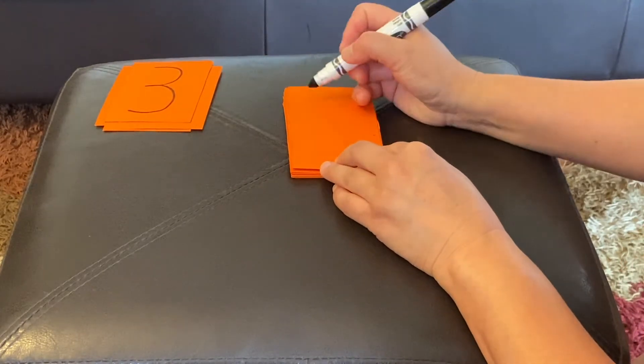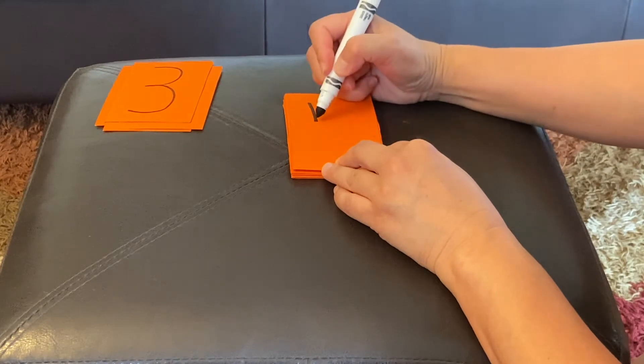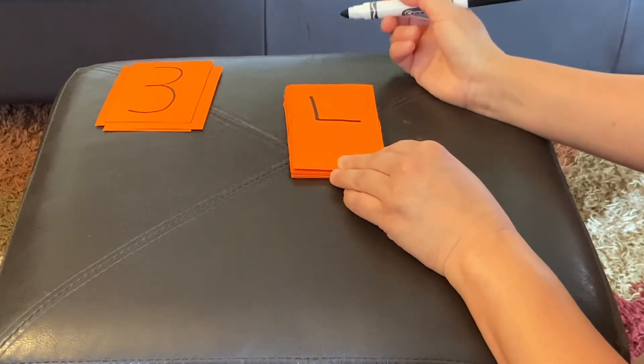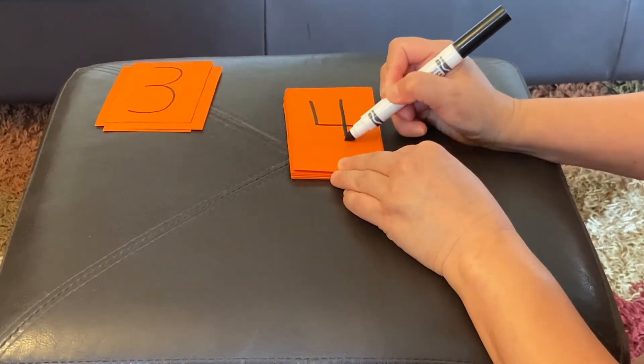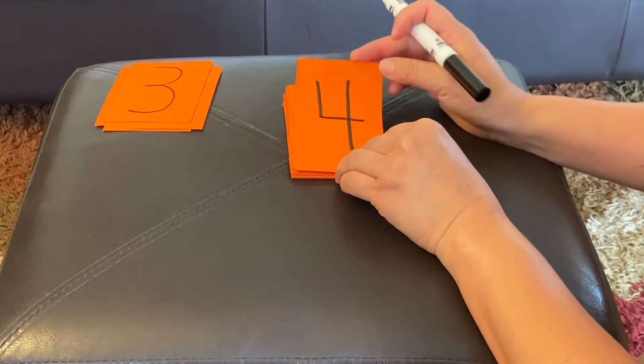A four. First, you make a short line down, then a short line across, and a long, straight line down. There's your four.